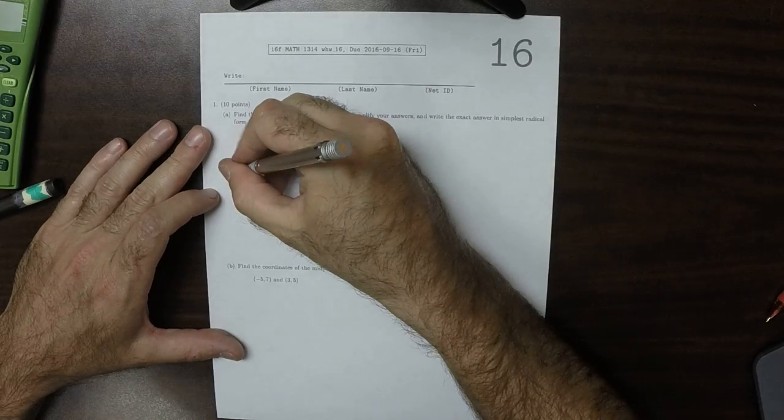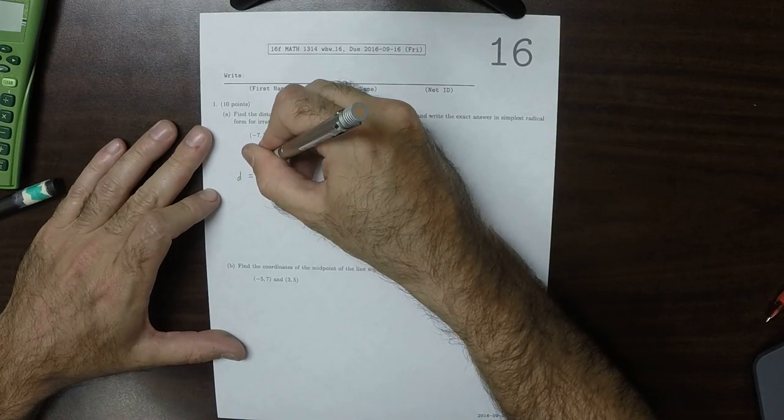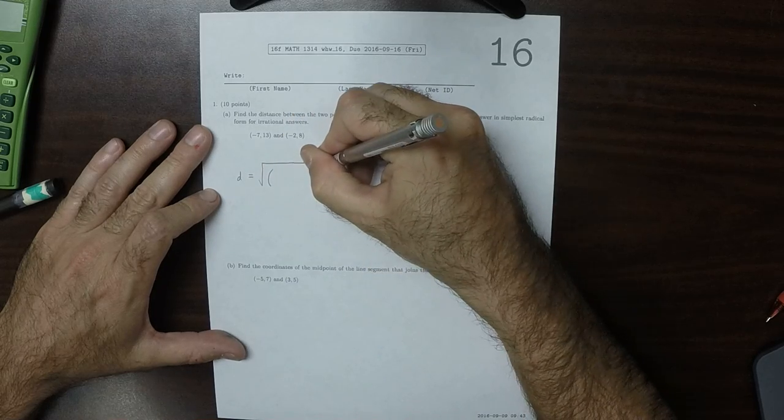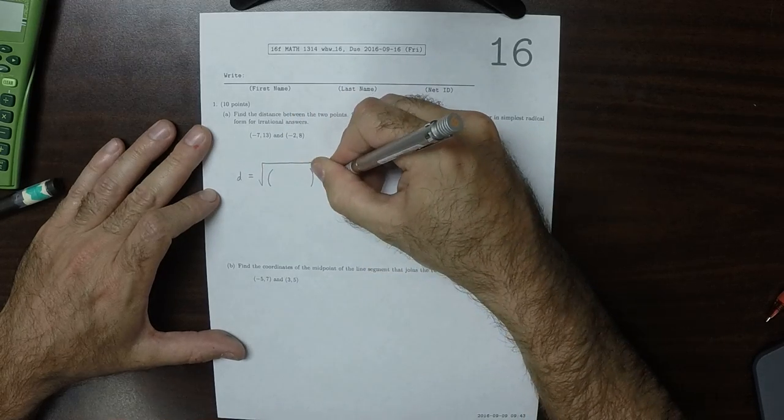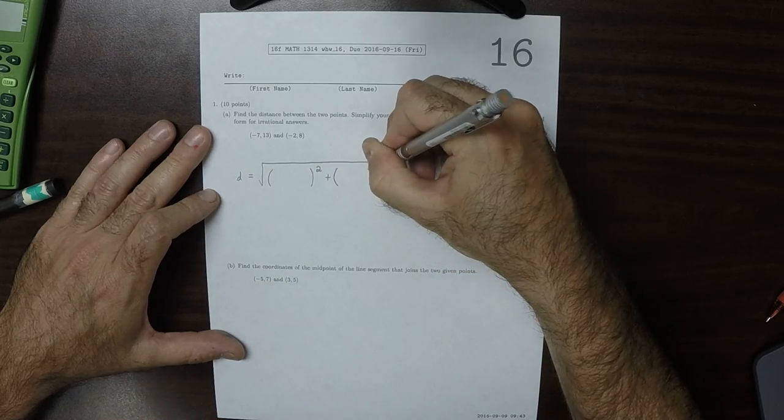So the distance formula takes this shape. It's the square root, and then the difference of the x's goes in here, and the difference of the y's goes in there.